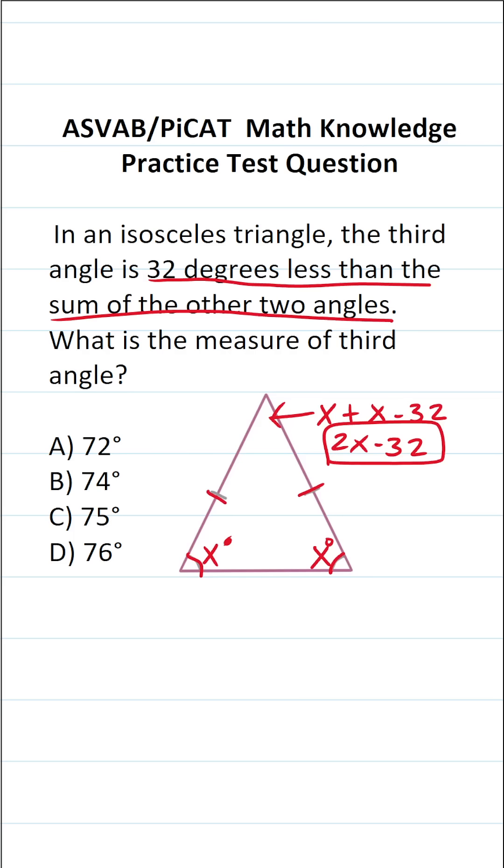In order to answer this one, you also have to know that all the angles in a triangle add up to 180 degrees. So this angle x plus this angle x plus the measure of this third angle, 2x minus 32, is going to equal 180. x, x, and 2x is 4x. So this is 4x minus 32 equals 180.